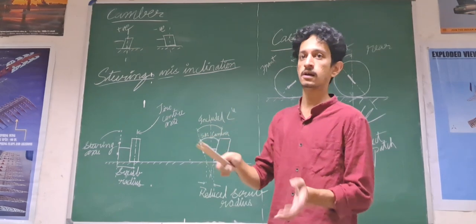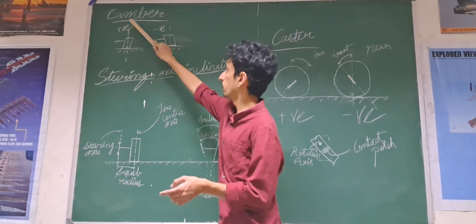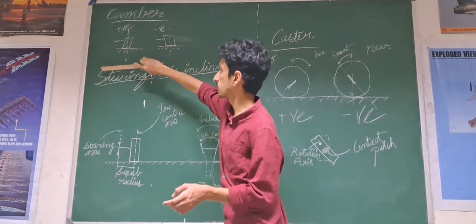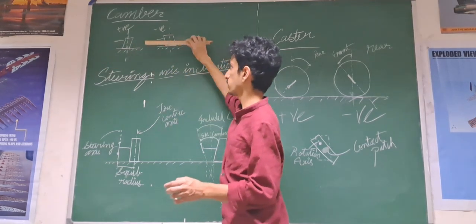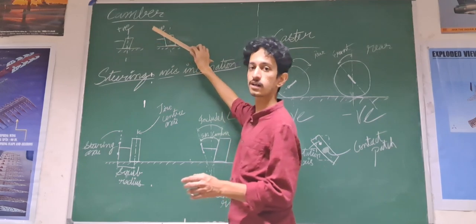When there are steeper bends, when there is positive camber, there are chances that the vehicle might roll. But here, due to the negative camber, there are lesser chances of rolling occurring at bends.